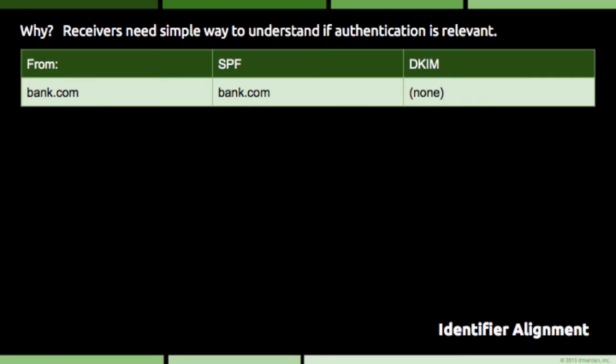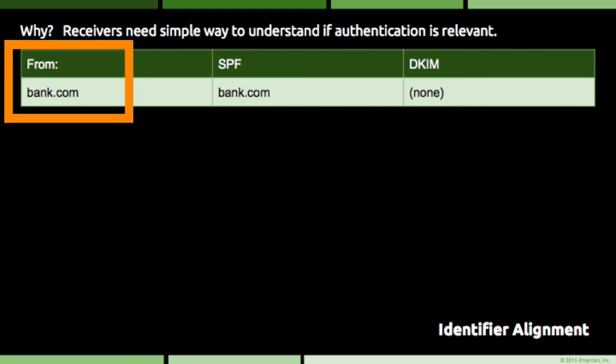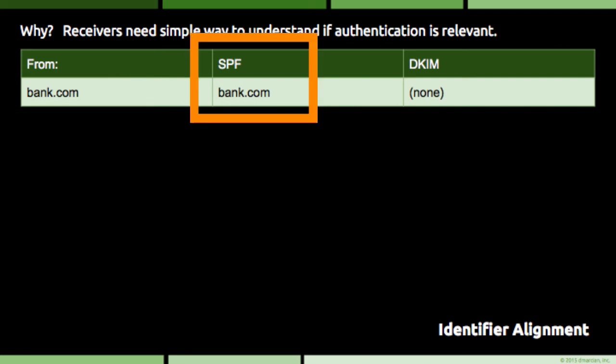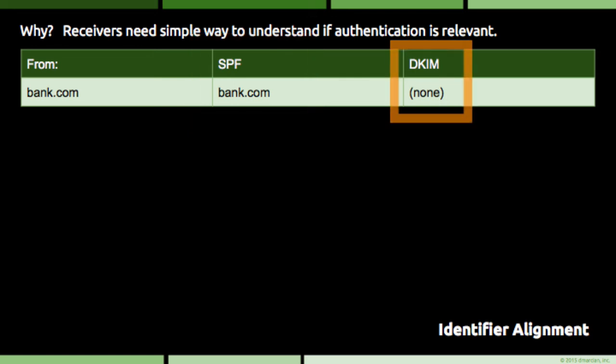In this first example, an email receiver got a piece of email where the DMARC domain — the domain found in the FROM header — is bank.com. The SPF check yielded a domain of bank.com, and there was no DKIM signature. The email receiver is looking for any positive signal that the email can be traced back to bank.com, and doesn't care if that signal comes from SPF or DKIM. Here, the authenticated identifier from SPF exactly matches the DMARC domain, so the email is compliant with DMARC.